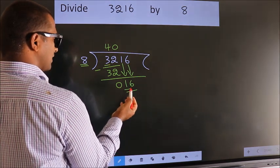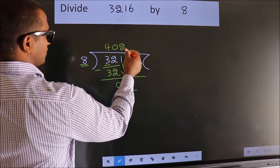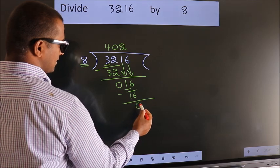So 16. When do we get 16? In 8 table. 8 twos 16. Now we subtract. We get 0.